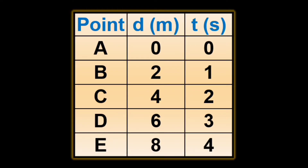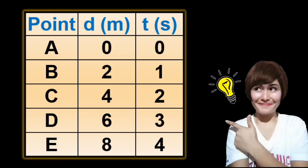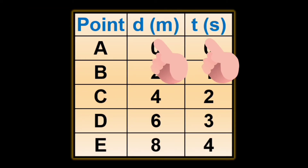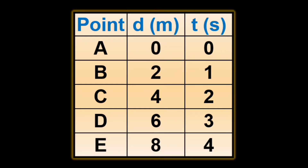Here is a table containing the data of the distance traveled by an object per second interval. Before plotting these points, you should know which of the two quantities is the dependent variable and which is the independent variable. Between distance and time, it is the distance that we need to observe as time changes, and it is dependent on time.